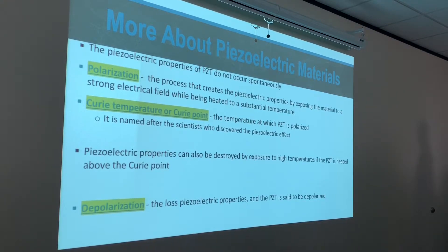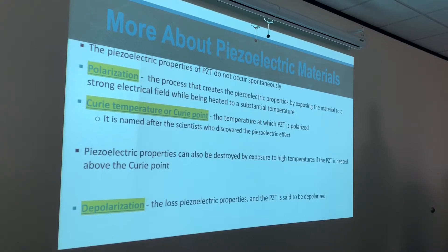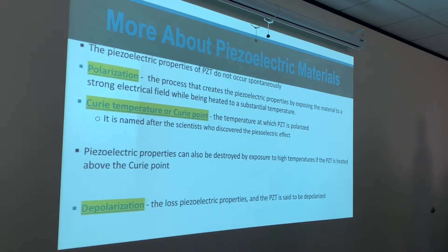Piezoelectric properties can also be destroyed by exposure to high temperatures. If the PZT is heated above the Curie point, the PZT becomes non-functioning — that's why we're not allowed to put transducers into an autoclave. An autoclave is what's used to clean surgical utensils. Depolarization is the loss of piezoelectric properties — the loss of the ability to convert electricity to sound or sound to electricity. Polarization creates those properties; depolarization destroys them.